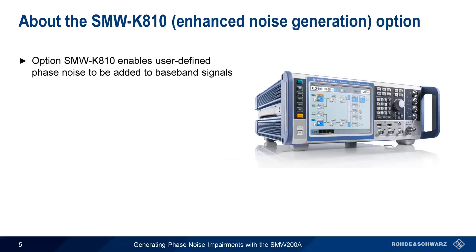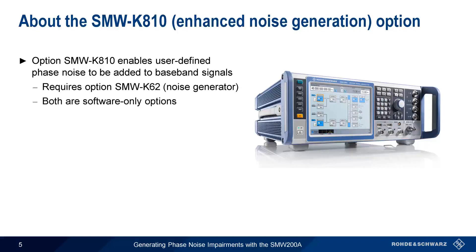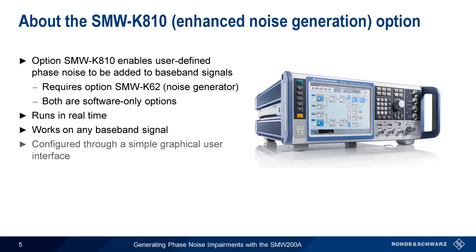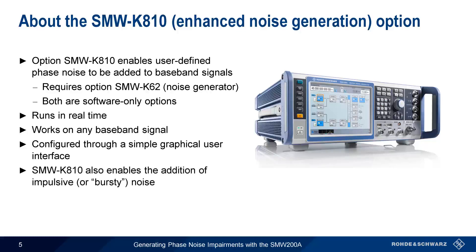The SMW-K810 Enhanced Noise Generation option enables phase noise impairments to be added to baseband signals in the SMW-200A. This option requires the presence of the standard noise generator SMW-K62, but both of these options are software only — no additional hardware or external devices are needed to generate phase noise impairments. The phase noise impairments are applied in real-time, and this can be done with any type of baseband signal. Phase noise impairments are configured through a simple graphical user interface. Note that the SMW-K810 option also enables the addition of impulsive or bursty noise to baseband signals, which we won't be covering in this presentation.